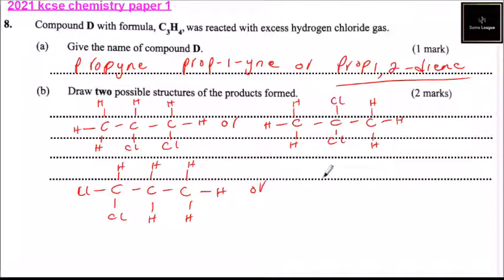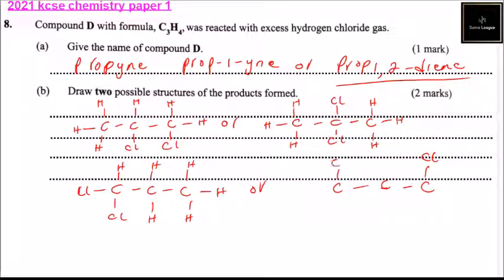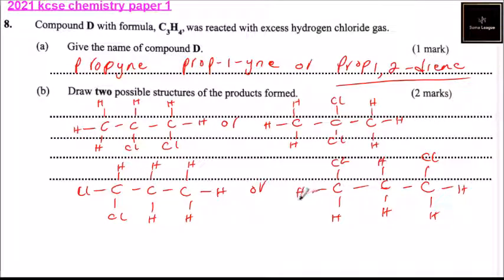Or we can have the chlorine atoms in a different position. So we have carbon, carbon, carbon — with both chlorine atoms on the same carbon, and the other positions filled with hydrogen: hydrogen, hydrogen, hydrogen, hydrogen, and hydrogen. So those are the two possible structures of the product formed.